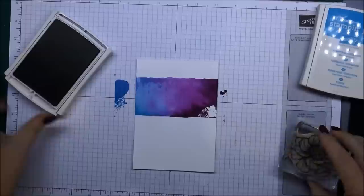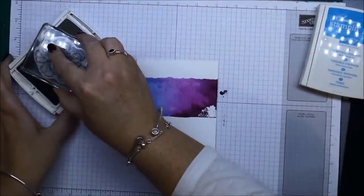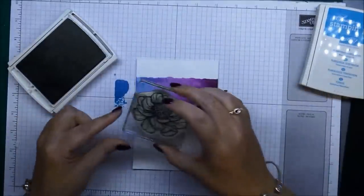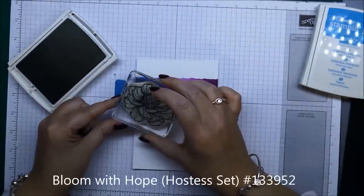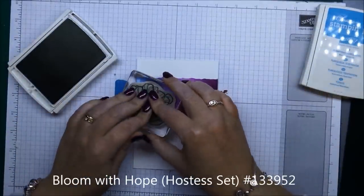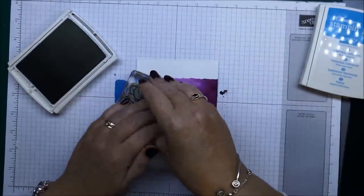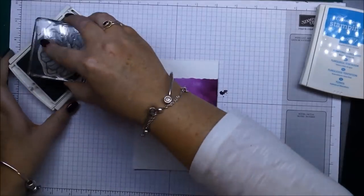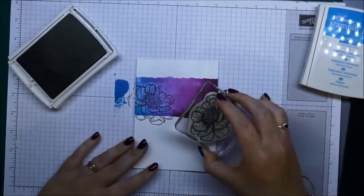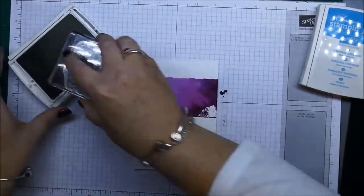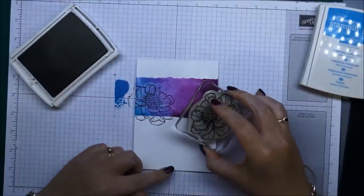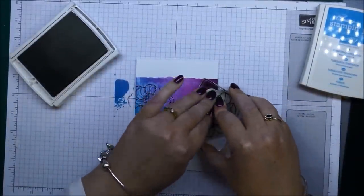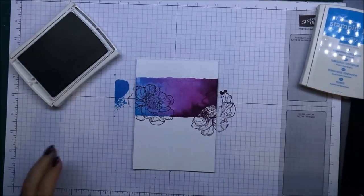So what I'm going to do is I'm just going to take a Blackberry Bliss ink pad. I'm just taking the large flower from the Bloom with Hope stamp set. I'm just going to stamp it once on this side here, going to use the center of my flower to fill in that gap right there.